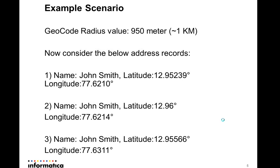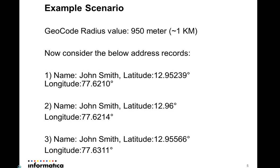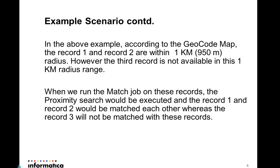Let's look at an example scenario. Consider a geocode radius value of 950 meters, which is approximately one kilometer. I have three records in the base object — all named John Smith — but with different latitude and longitude values. If you view these records on a map, records one and two are within one kilometer radius of each other.